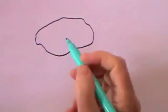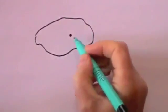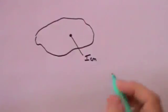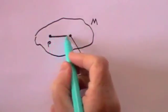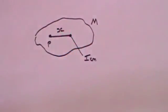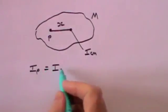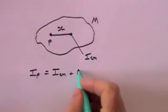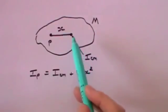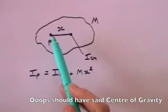The moment of inertia of any body depends on the pivot point, and you might think that means you need to calculate the moment of inertia every time you pick a new pivot point. But that is not true. If you know the moment of inertia about the centre of mass of a body of mass m, and you want to pivot it at any other point P, a distance x from the centre of mass, then the moment of inertia about point P equals the moment of inertia about the centre of mass plus m times x squared.